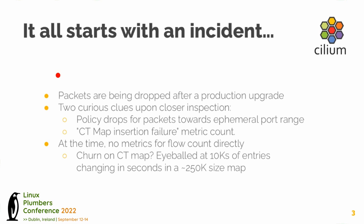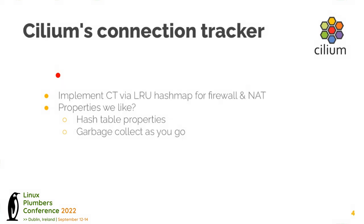The other thing we noticed was we got the CT map insertion failure metric incremented. Cilium does this whenever it tries to insert an element into the LRU map and the insertion actually fails — the BPF helper call returns an error. This is interesting when you consider that the LRU property is supposed to evict an old entry when you insert something into a full map, but evidently there are error conditions it simply can't handle. At the time we were seeing roughly 40–50,000 entries changing in the map within seconds, on a map sized at about 250,000 entries.